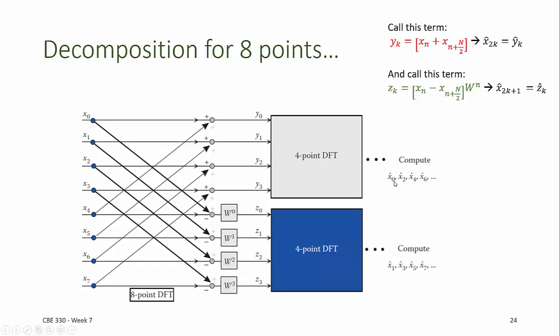The values of y can be used to find x hat 0, x hat 2, x hat 4, x hat 6, etc. And the values of z can then be used to find x hat 1, x hat 3, x hat 5, and x hat 7, the odd ones.